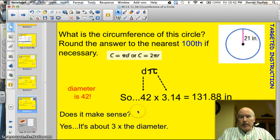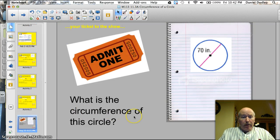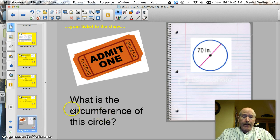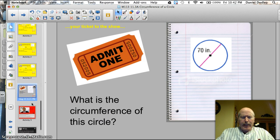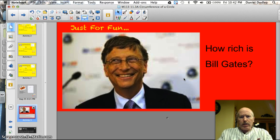Does this answer make sense? Well, 40 times 3 would be 120, so, yeah, 42 times 3.14. Yes, my answer makes sense. All right, time for the ticket to the show. Here it is. It's all you get. What is the circumference of this circle? Good luck. All right, got that written down. I can go on to my ridiculously rich questions. How rich is Bill Gates?